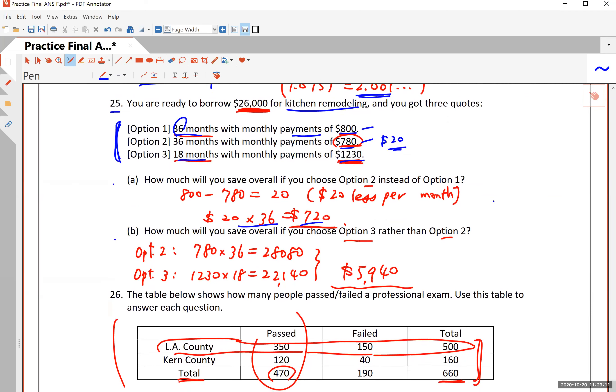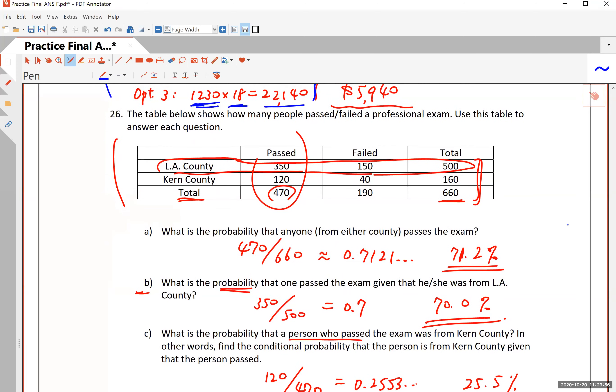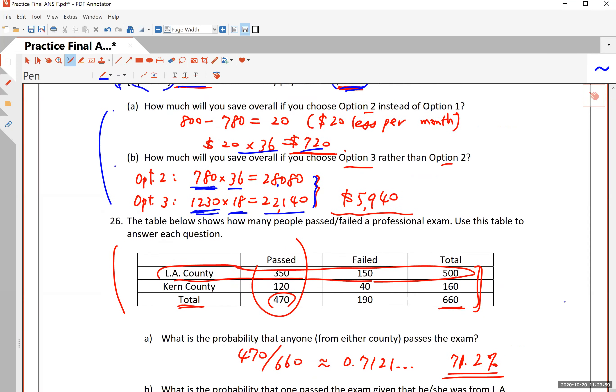If you choose option two over option one, how much will you save overall if you choose option three rather than option two? Option two is an option in which you pay $780 36 times. That is the total payments of $28,080. Option three, you pay $1,230, but you only pay 18 times. That product is $22,140. Difference between these is $5,940. And that is your answer. Everybody will encounter problems like this in his or her lifetime.